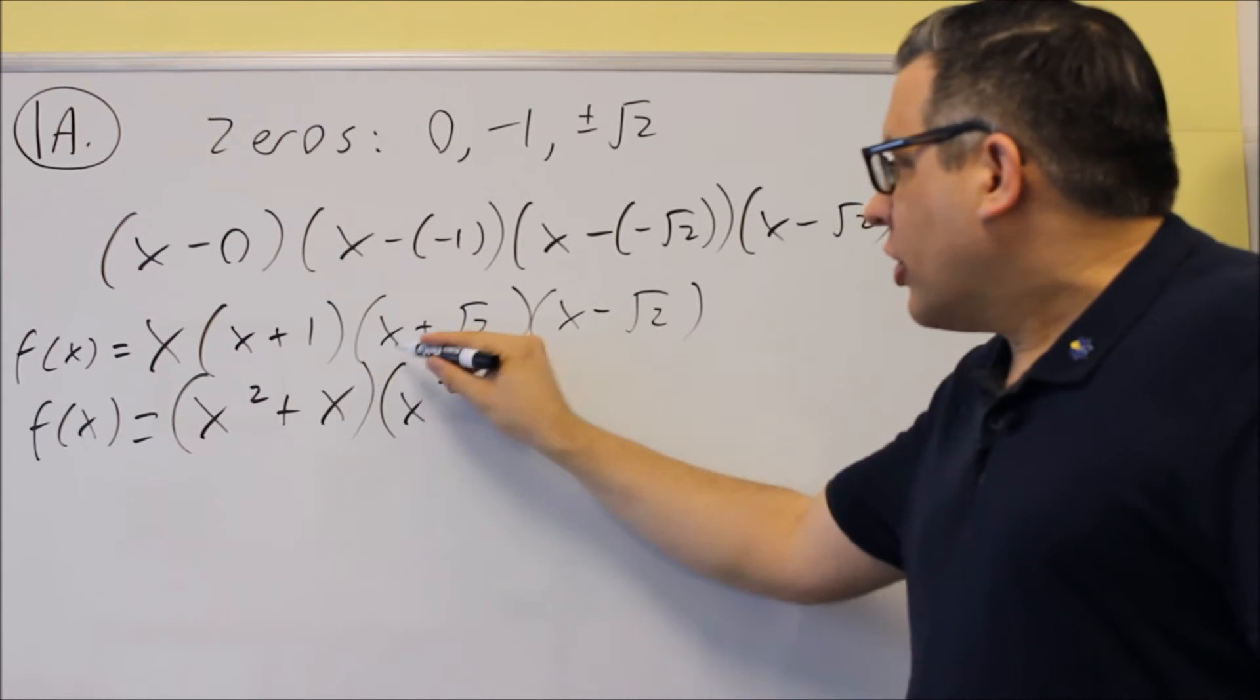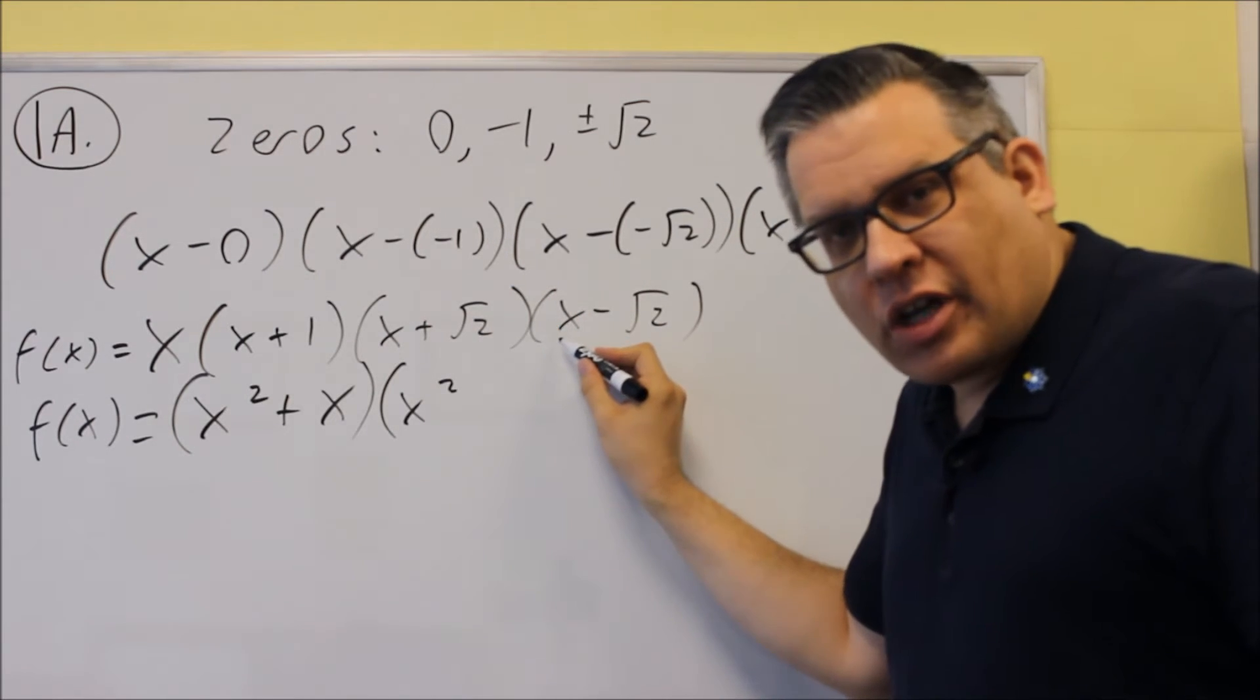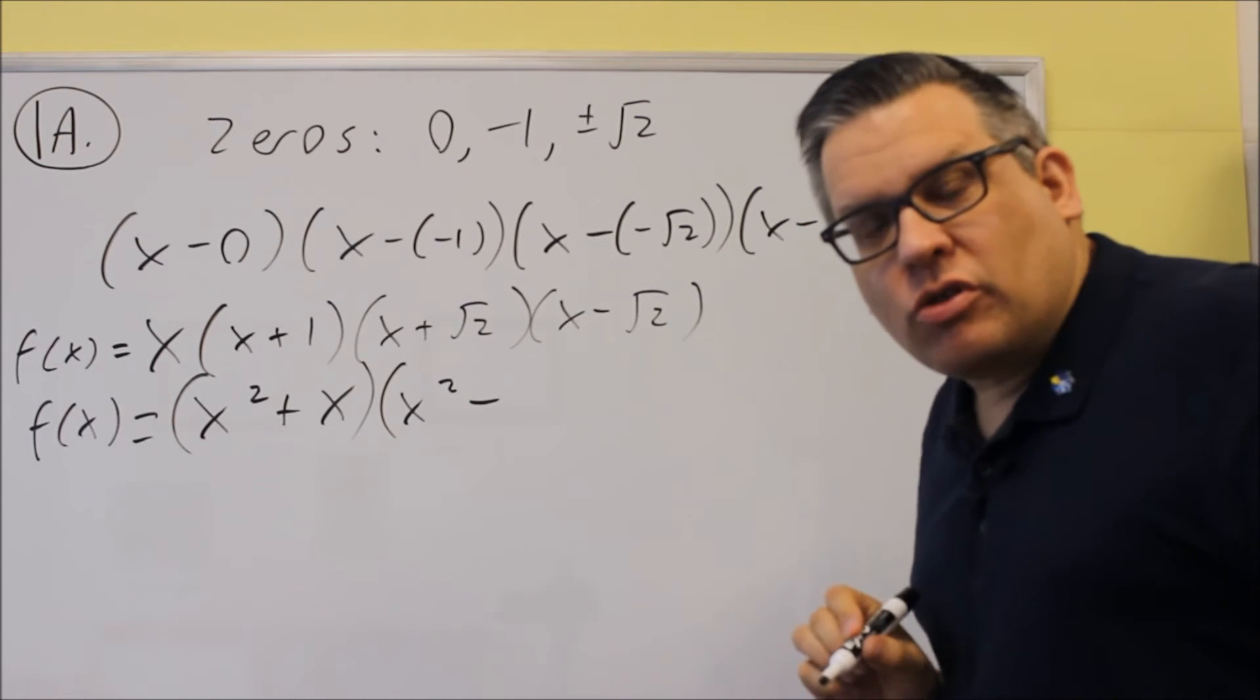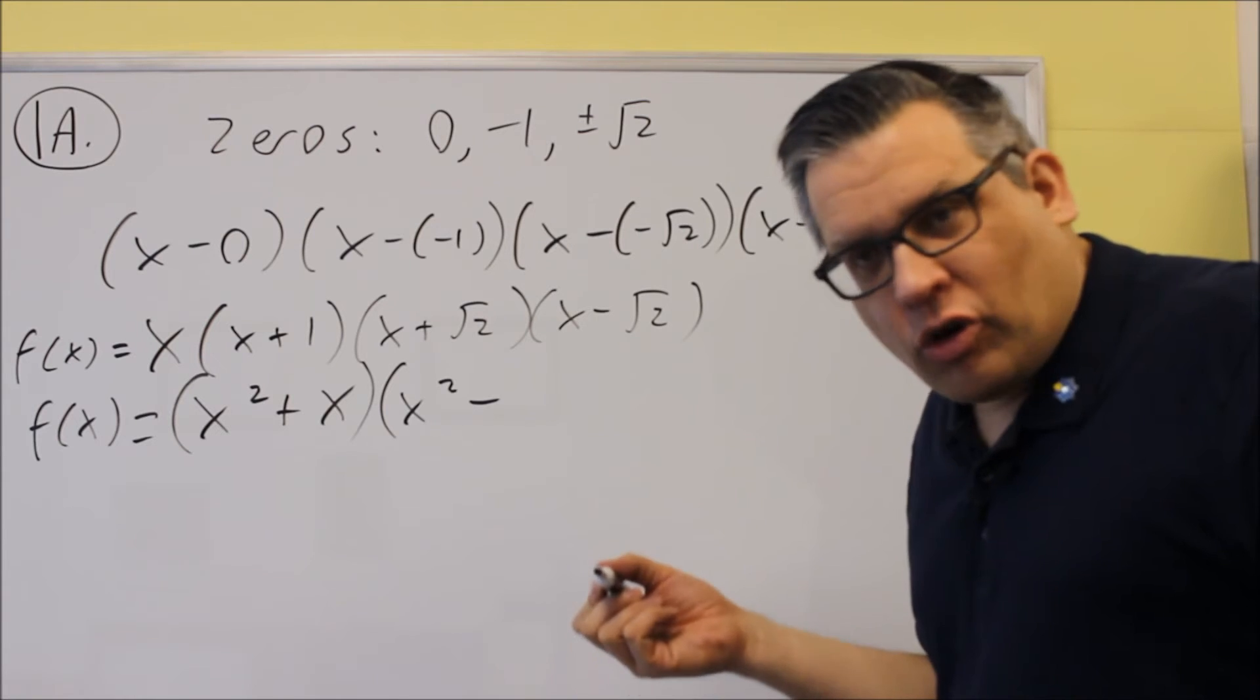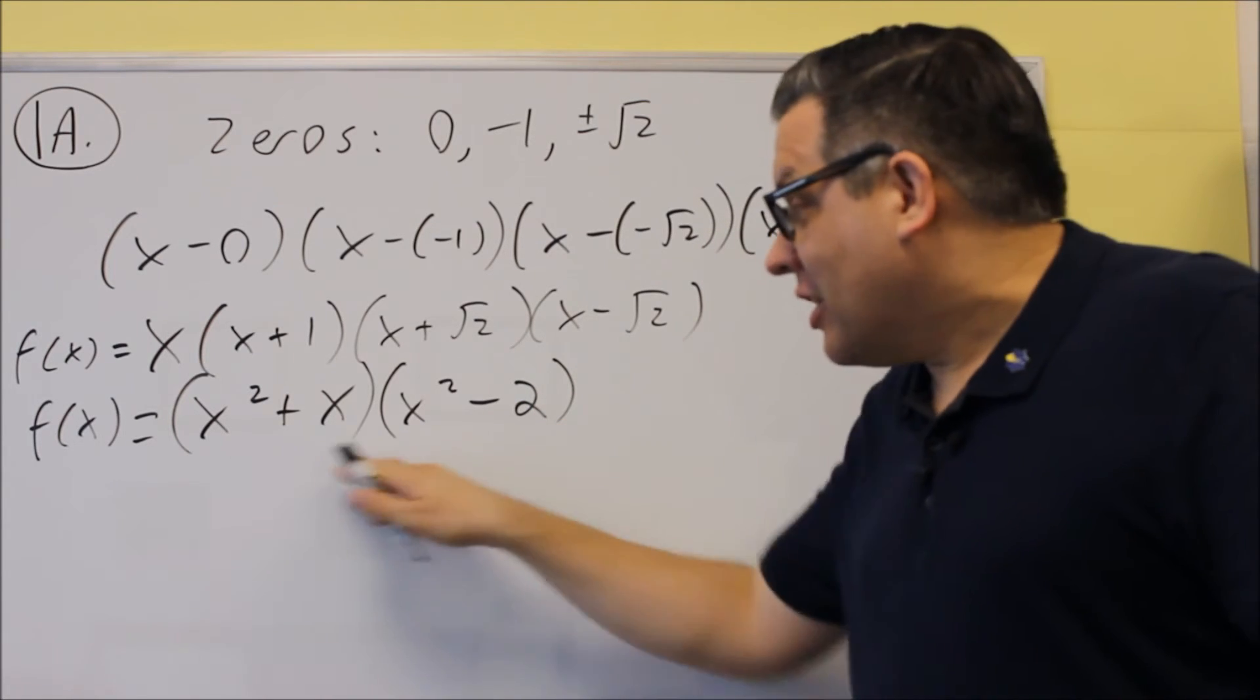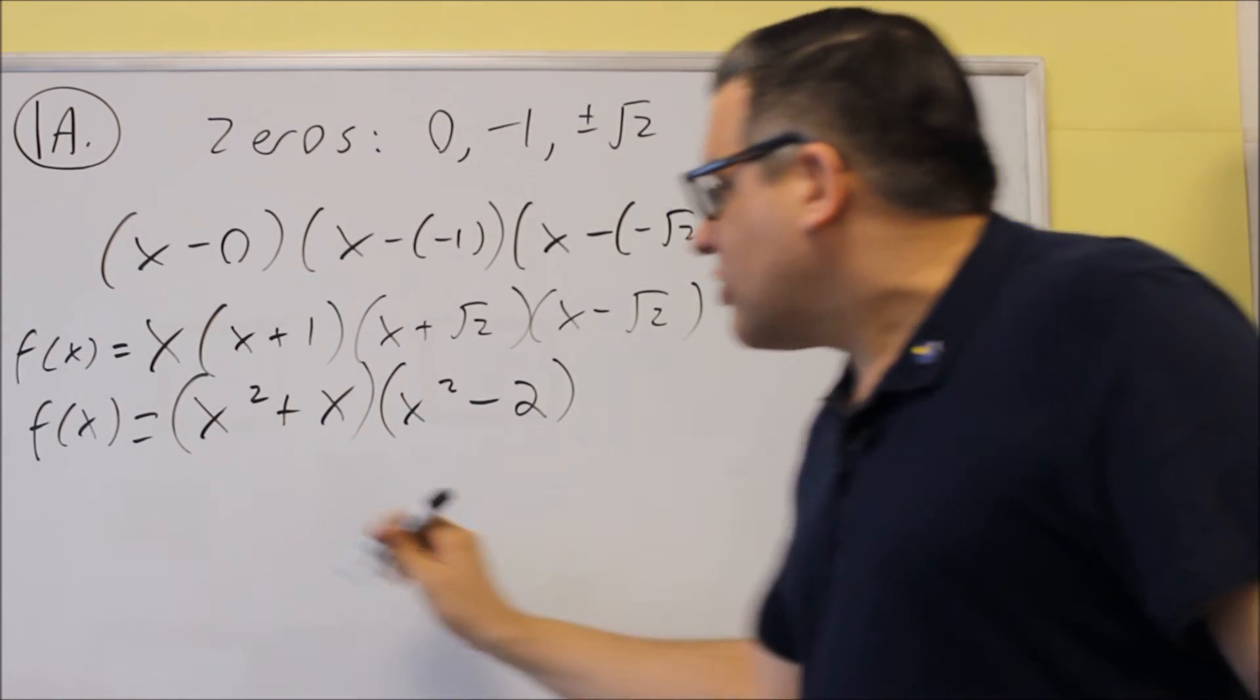Now we'll get a negative root 2x and a positive root 2x, those are going to cancel. Then we have a minus. Root 2 and root 2 is going to give you square root of 4, which is just going to be 2. So now I've taken it down to two terms. The last thing I'll do is multiply these two together.